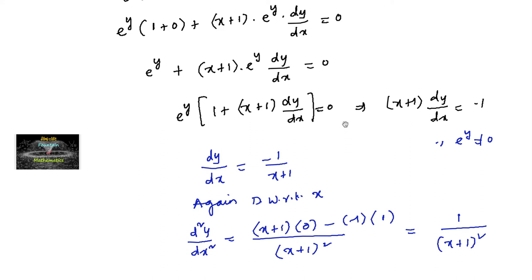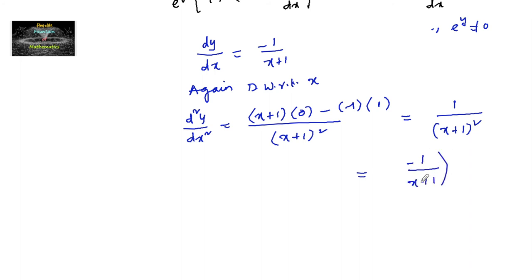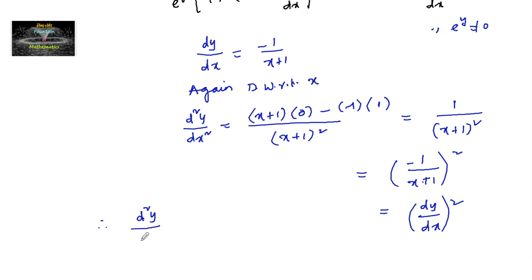This is equal to the square of dy/dx, which is [-1/(x+1)]² = (dy/dx)². Hence we have proved that d²y/dx² = (dy/dx)². Hence proved. Thank you.